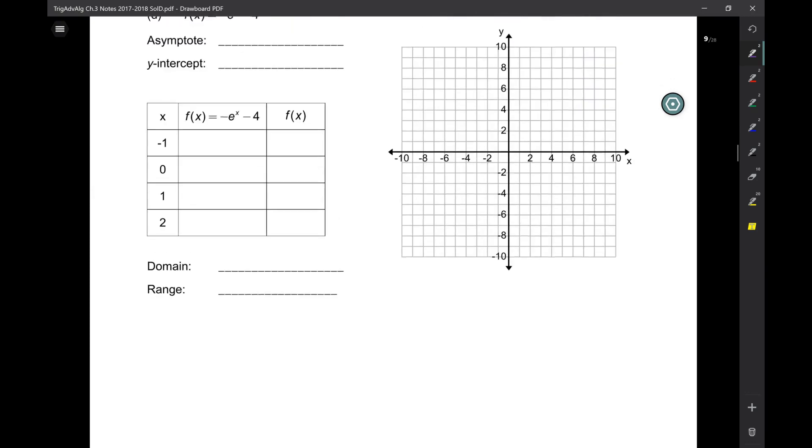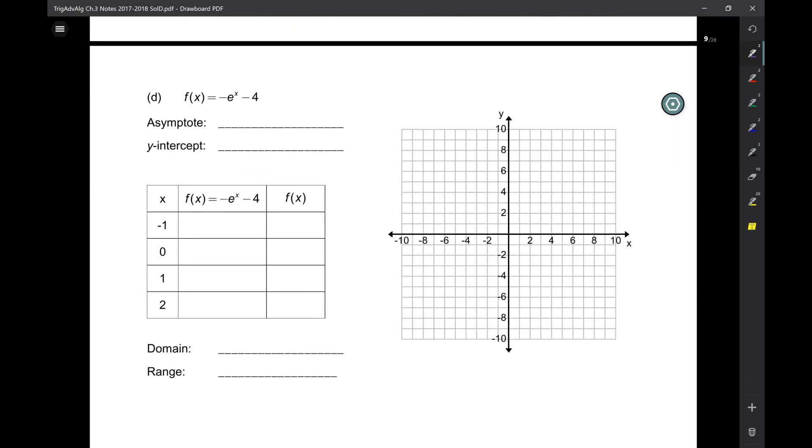So this one here, what's going to be the asymptote? Tell me again, negative 4. Tell me again, tell me again. y equals negative 4, thank you, that's what I'm looking for. y intercept, negative 5. So it's negative e to the 0 minus 4. Negative 1 minus 4. So negative e to the minus 1 minus 4.